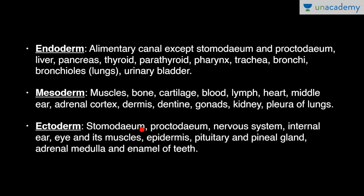Ectoderm gives rise to stomodeum and proctodeum — so these two alimentary canal extremities are derived from ectoderm — as well as the nervous system, internal ear, eye and its muscles, epidermis, pituitary and pineal gland, adrenal medulla and enamel of teeth. All these structures are derived from ectoderm.